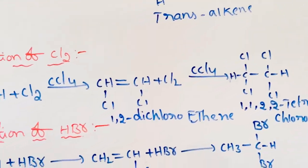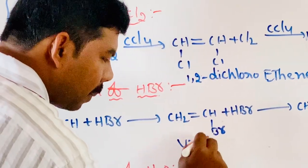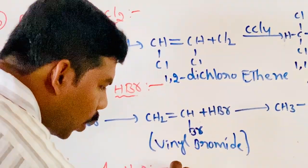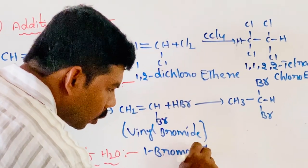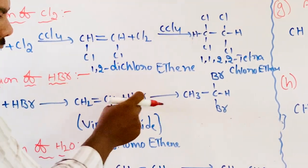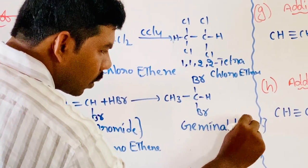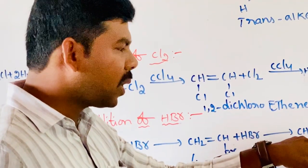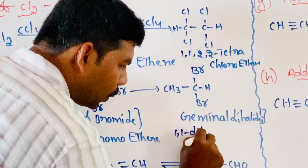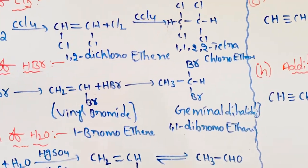Next, addition of hydrogen bromide. Ethyne addition with hydrogen bromide gives vinyl bromide. Vinyl bromide is the common name; the IUPAC name is 1-bromoethene. This vinyl bromide further reacts with hydrogen bromide to give a geminal dihalide. What is geminal dihalide? Two halogen atoms on the same carbon atom is called a geminal dihalide. Its IUPAC name is 1,1-dibromoethane.